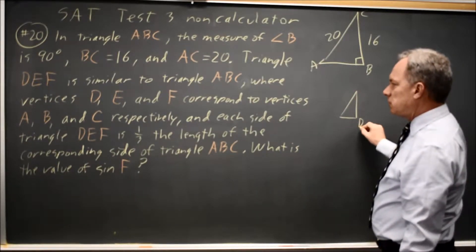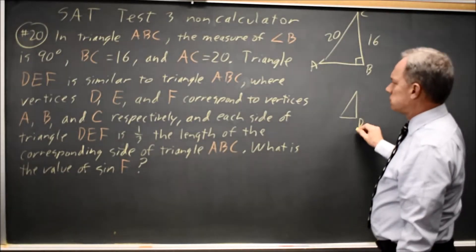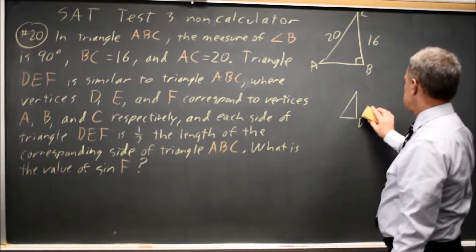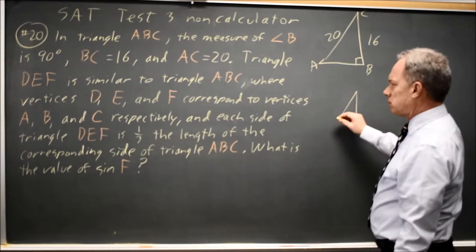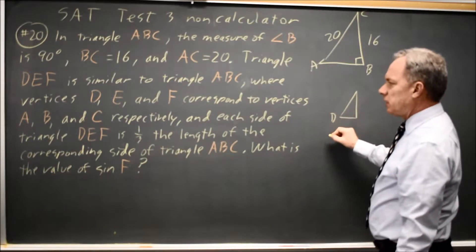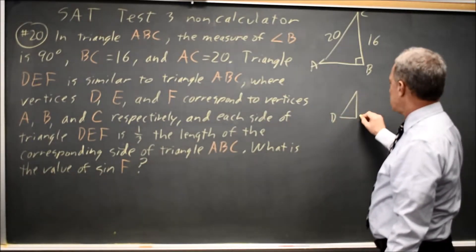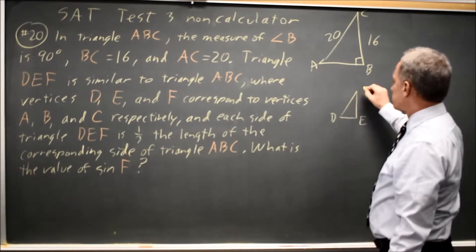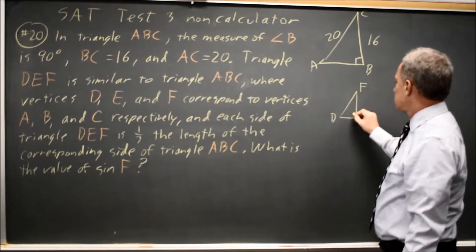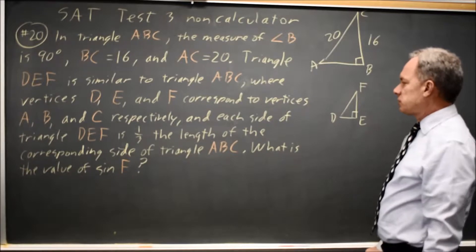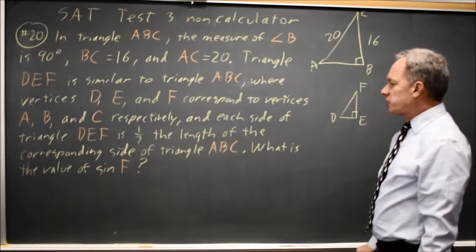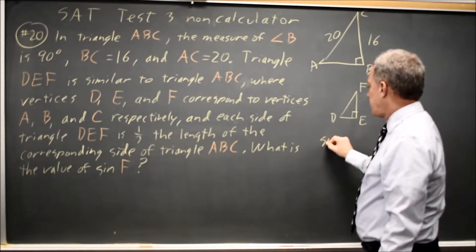Where D corresponds to A, E corresponds to B, and F corresponds to C. And these are similar triangles. What is the value of the sine of angle F?